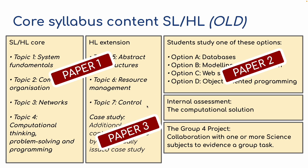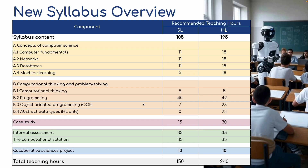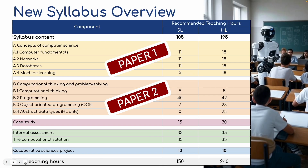So the old syllabus had paper one, paper two and paper three. Now we've moved from three papers to two papers: Paper one, which is going to be concepts of computer science, and paper two, computational thinking and problem solving — basically the theory and the programming. The option unit, databases, has now been moved into part of the core components — part of the concepts of computer science, topic A.